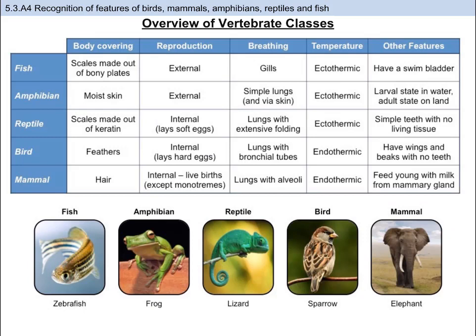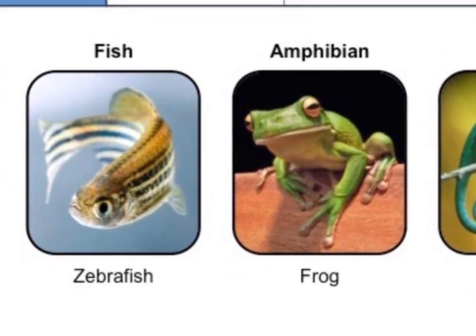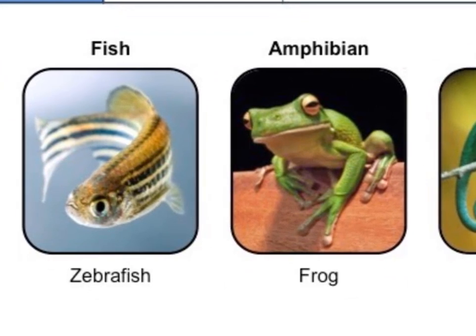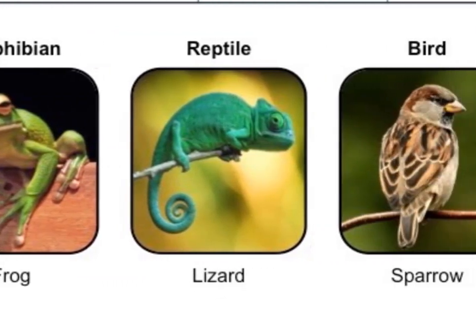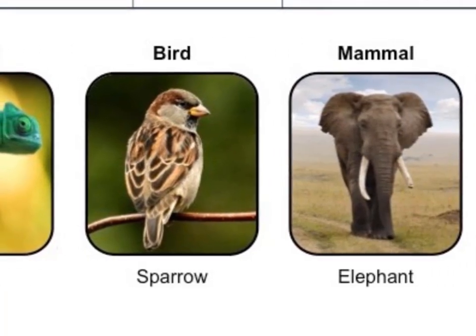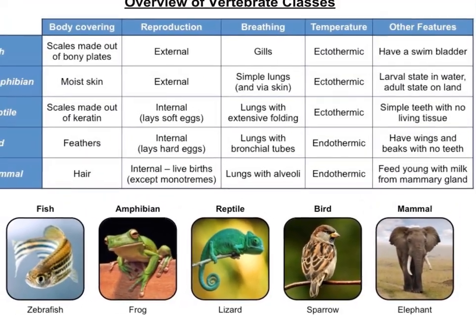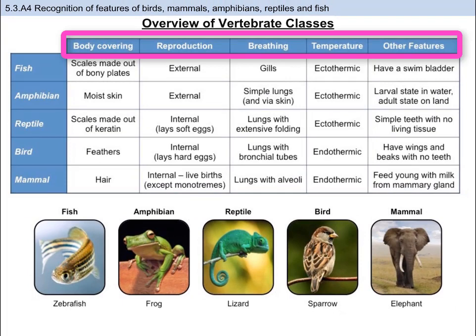The final application of this is knowing the distinguishing features of the class Vertebrata. Better known as vertebrates, this is a class within the phylum Chordata. Chordates are distinguished by a notochord, which we will learn about later. Vertebrates are characterized by having a vertebral column. All vertebrates are chordates, but not all chordates are vertebrates. You should be able to outline the characteristics of the five major vertebrate classes and identify the vertebrate class of an animal given some external features — specifically body covering, reproduction, breathing, temperature regulation, and some other features.